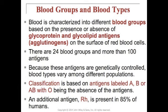The Rh factor determines the positive or negative designation. If a person is A positive, B positive, or O positive, it means the Rh factor is present on the blood. O negative means there is no Rh factor; O positive means there is an Rh factor.